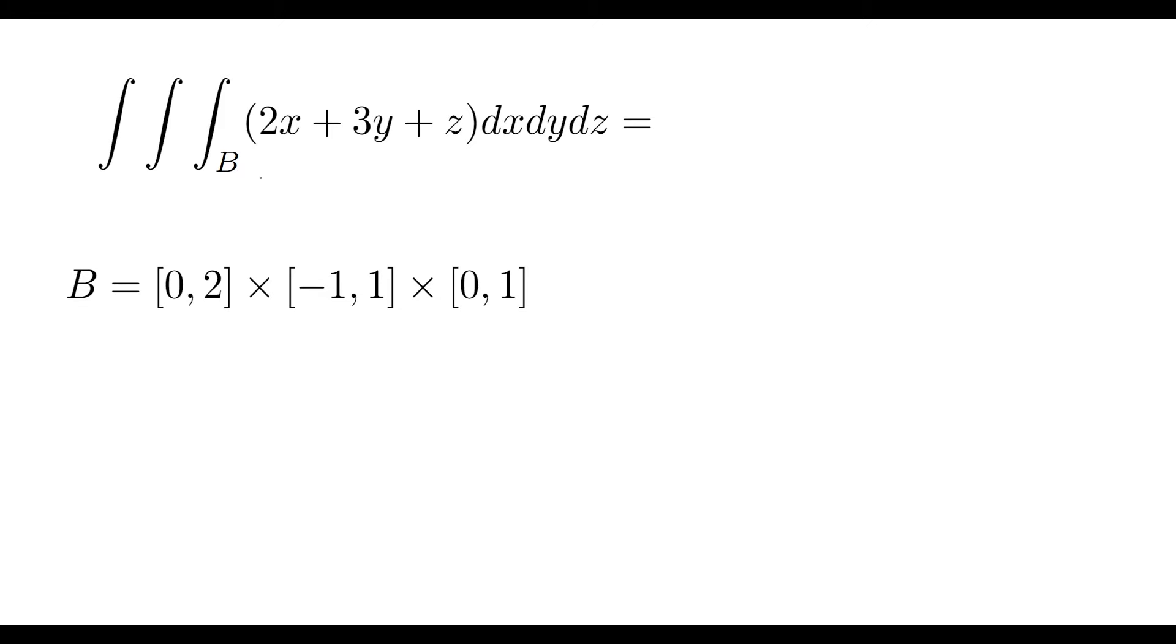All right, so we have the triple integral here over some box B. Well, what does that mean? If I've got that B down here, I've said that B is defined by three separate regions here from 0 to 2, minus 1 to 1, and 0 to 1. And what this represents, this kind of goes hand in hand with our dx, dy, and dz. Now it is typically the convention for us to be defining this across the x, the y, and the z.